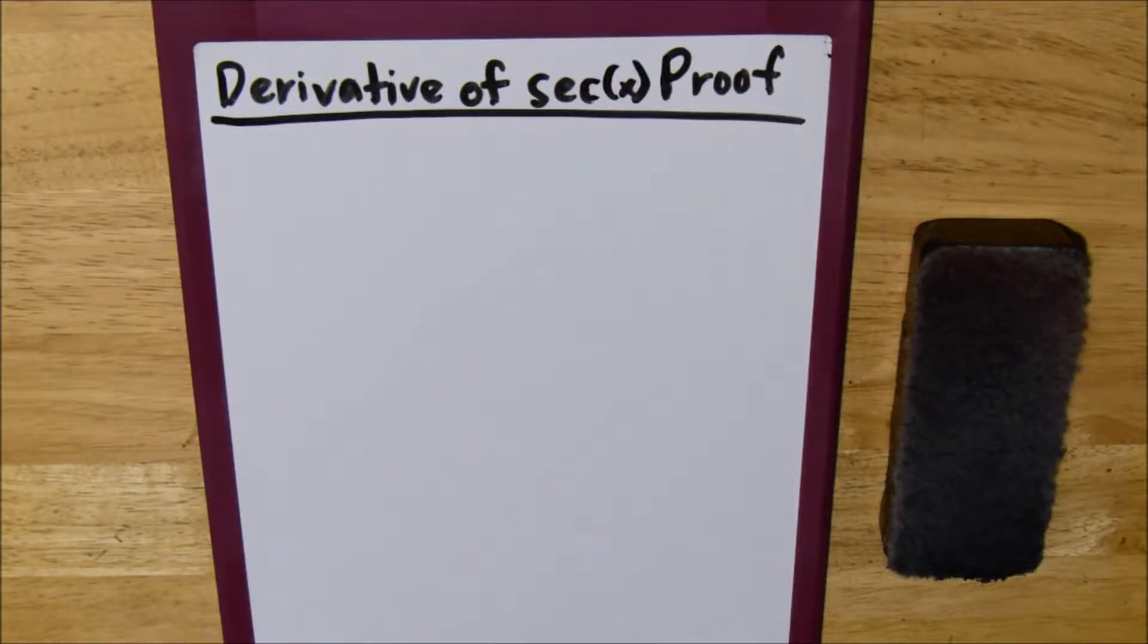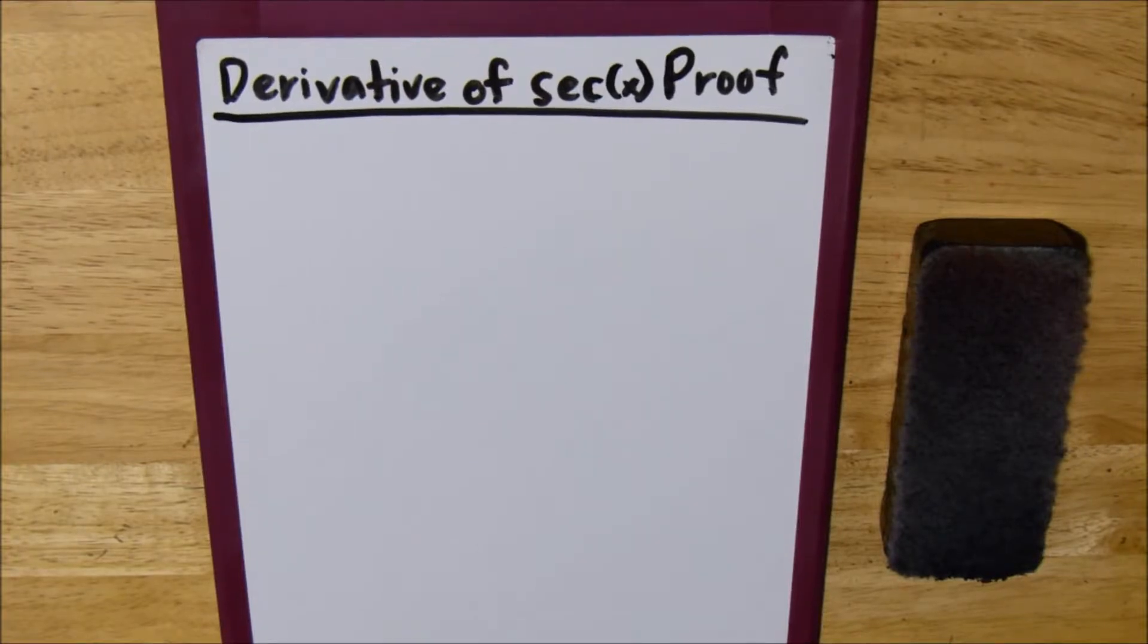Alright, so now we're going to be talking about the derivative of secant of x. This is pretty similar to the derivative of tangent of x, cosecant of x, and cotangent of x in that you need to know some sine and cosine properties and you need to know the quotient rule.